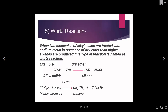Another type of reaction is the Wurtz reaction. The Wurtz reaction is when two molecules of alkyl halide are treated with sodium metal in the presence of dry ether, then higher alkanes are produced. In the presence of dry ether, two molecules of alkyl halide react with sodium to produce an alkane. A typical example is two molecules of methyl bromide reacting with sodium to produce ethane plus two molecules of sodium bromide. Dry ether is mostly used in facilitating the reaction.